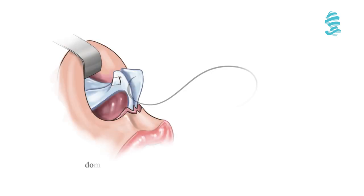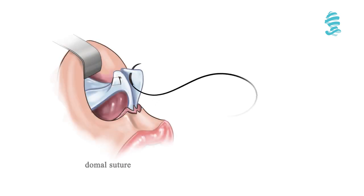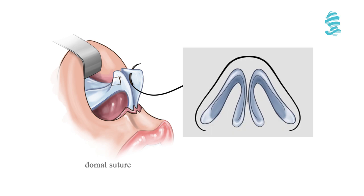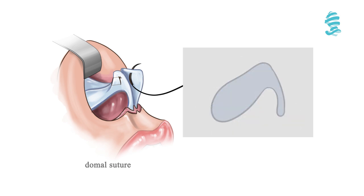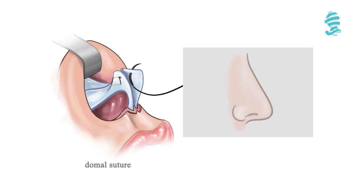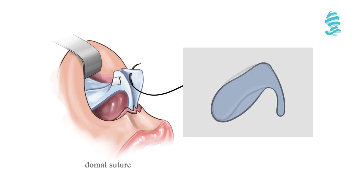Tip sutures are very popular in rhinoplasty. They are used to narrow the domal arch, give shape to the lateral crura, increase tip projection, and change the rotation of the lateral crura.